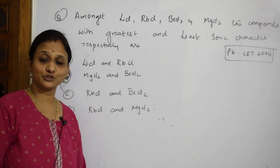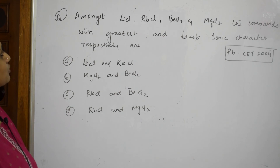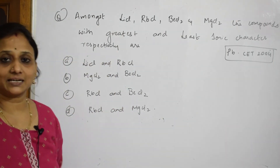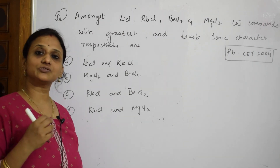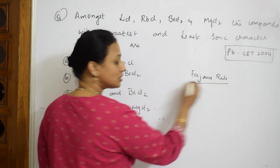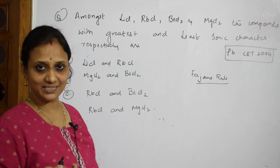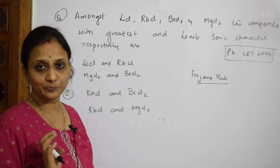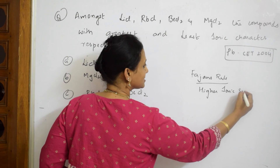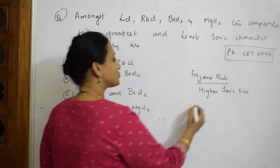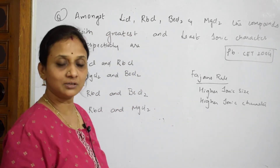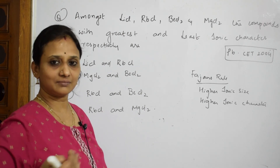One more question: 'Among LiCl, RbCl, BeCl₂, and MgCl₂, which has the greatest and least ionic character?' When an ionic character question is given, apply Fajan's rule. According to Fajan's rule, the larger the ionic size of the cation, the greater the ionic character; the smaller the ionic size, the more covalent the compound.